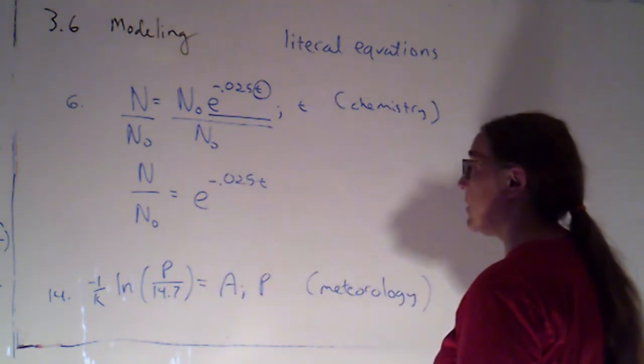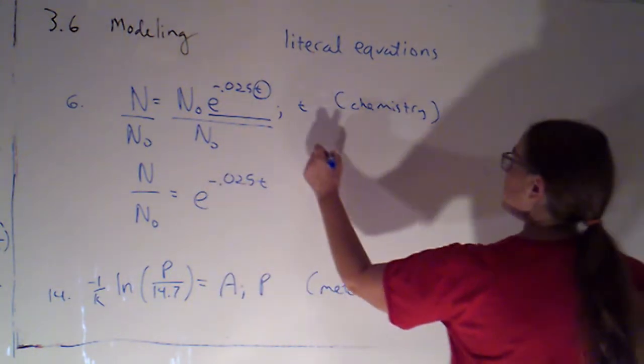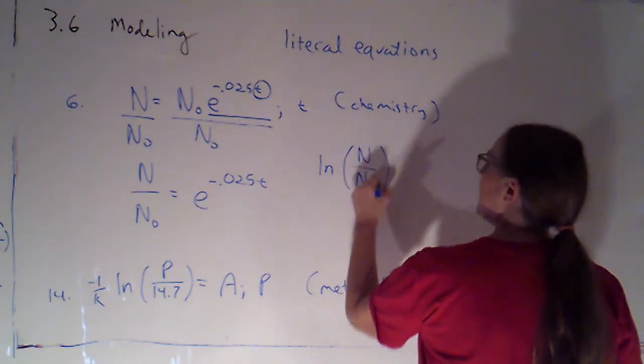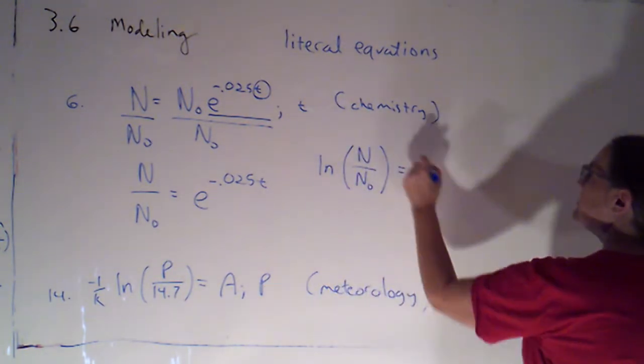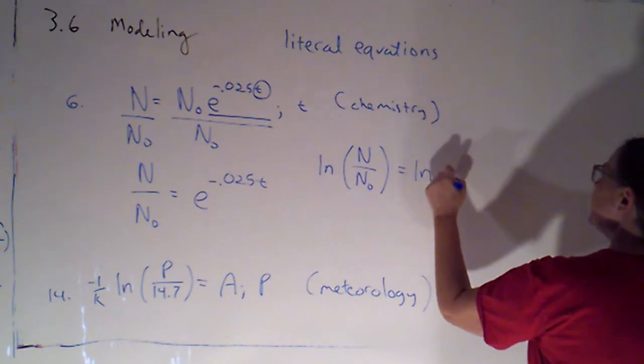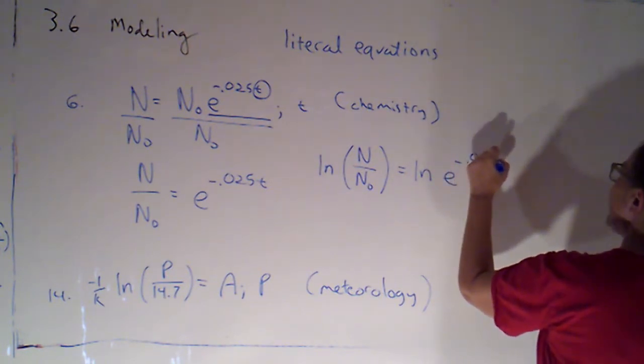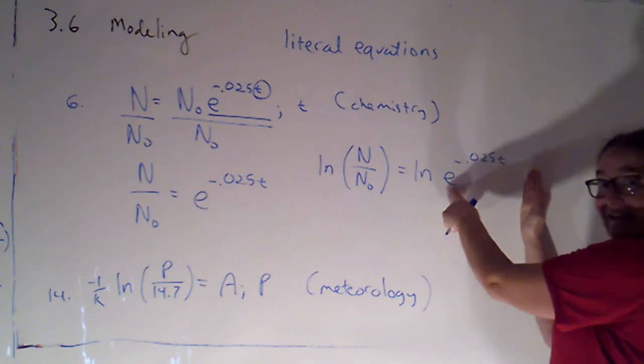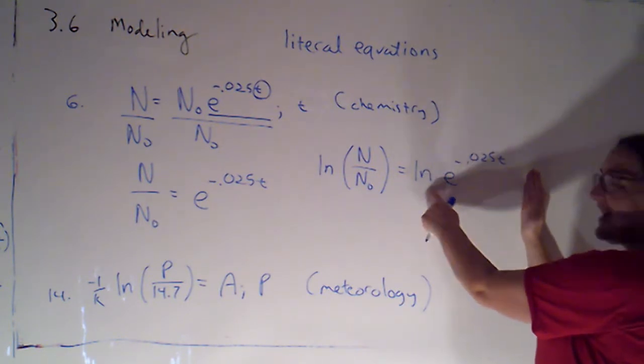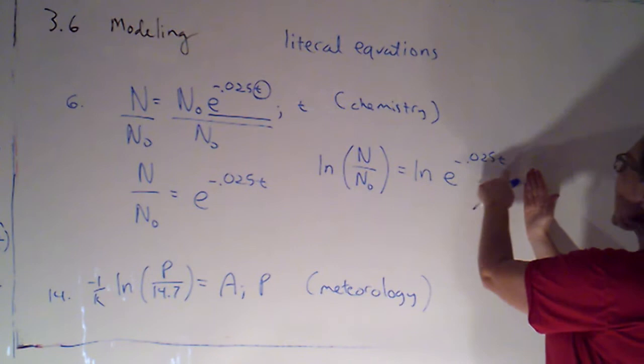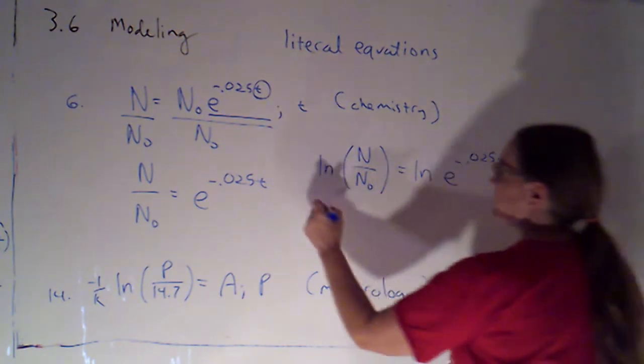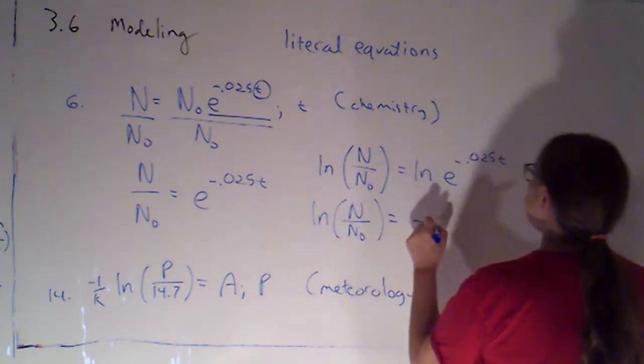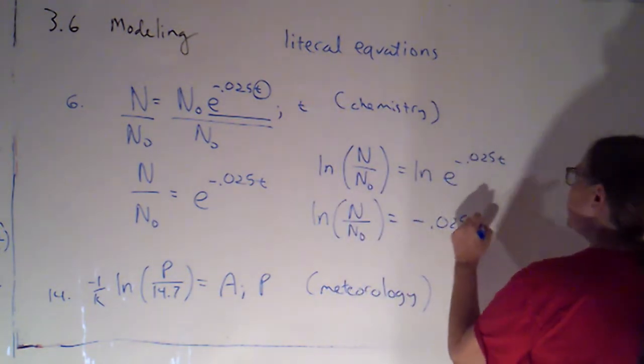Now that I've isolated the exponential expression, I can just take the natural log of both sides. I'll have the natural log of n over n naught is equal to the natural log of e to the negative 0.025t. Since my base here is e, the log function with base e, the natural log undoes that, I just get that exponent. So we'll have the natural log of n over n naught is equal to negative 0.025t.